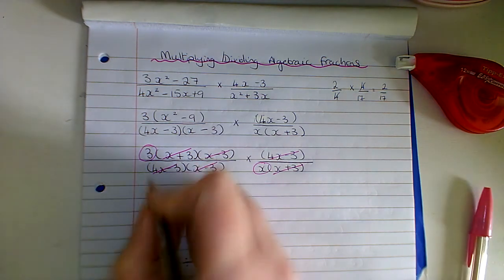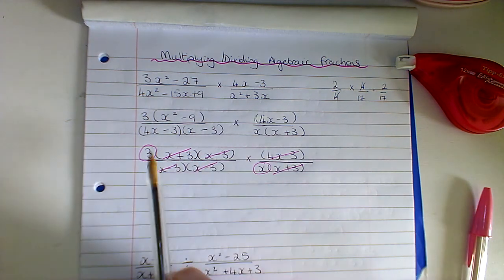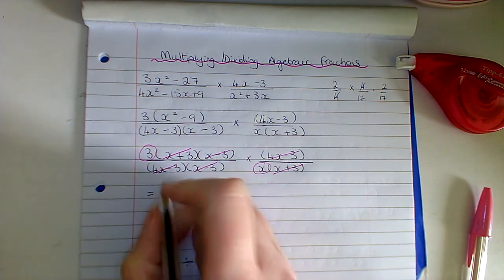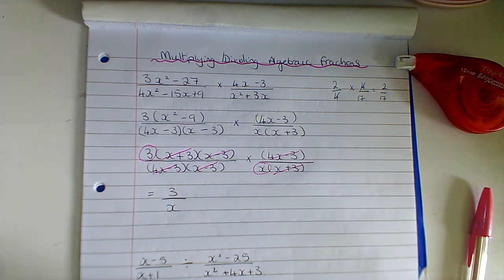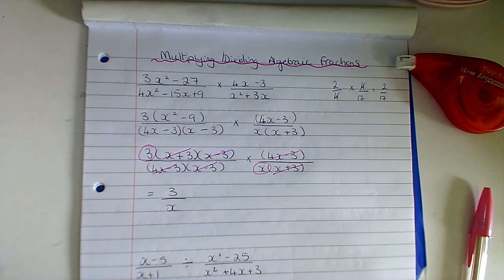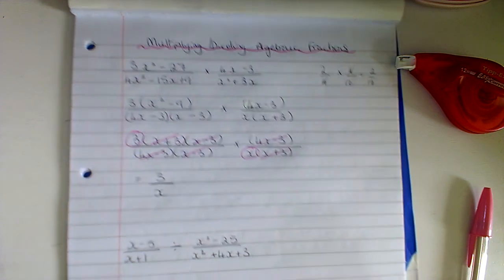So what I'm left with then is the 3 up here and the x down here, so my answer is - and we're still going to do multiply top by top - so I'm left with 3 over x. So that's that sum broken down step by step, factorizing and canceling to the best of your ability.